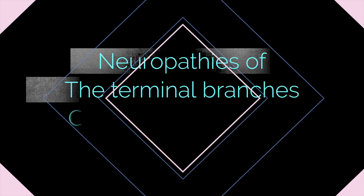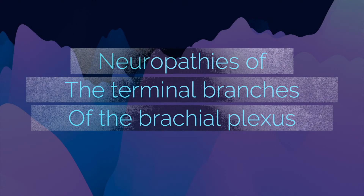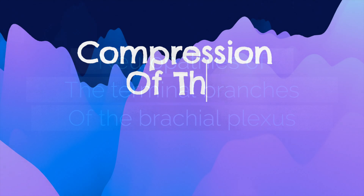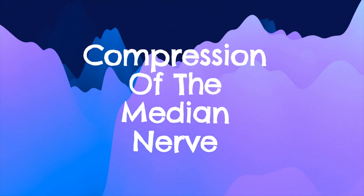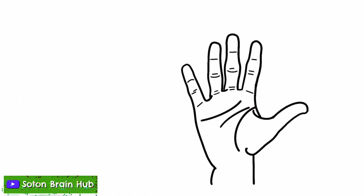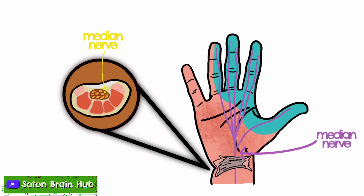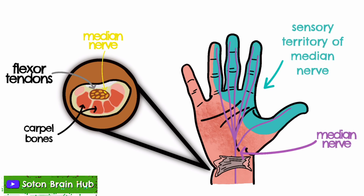There are also some common symptoms related to neuropathy of the terminal branches of the brachial plexus. For instance, compression of the median nerve as it passes through the wrist can lead to carpal tunnel syndrome, characterised by numbness, pain and tingling in the wrist and hand.